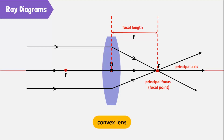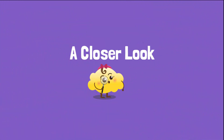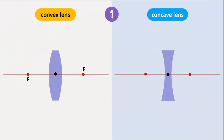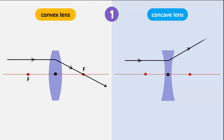If the lens is symmetrical, both the focal point and focal length will be at the same point on either side. Let's take a closer look at the ray diagrams for both lenses. When a ray of light travels parallel to the principal axis, it refracts and passes through the focal point on the other side of the convex lens. However, when the same ray passes through the concave lens, it diverges, and its refraction can be traced back to the focal point.